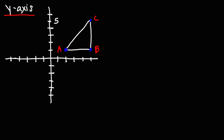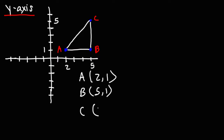Now let's work on some practice problems. Go ahead and reflect the figure over the y-axis — feel free to pause the video as you work on this problem. I'm going to write out the points first. Point A is at (2, 1), point B is located at (5, 1), and point C is located at (5, 5).